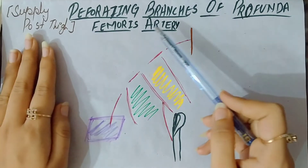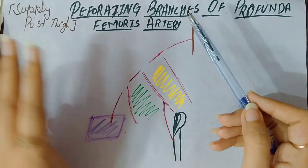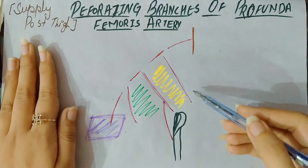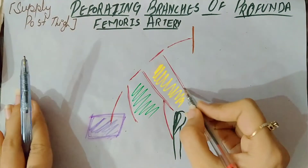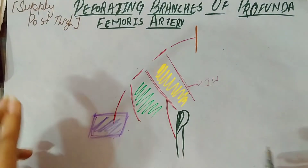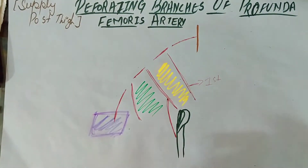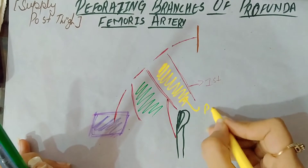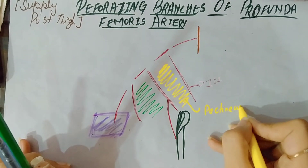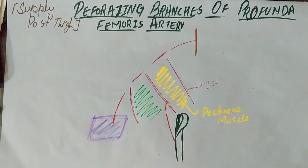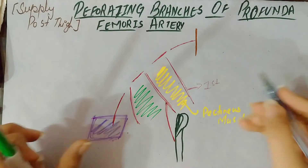The perforating branches of the profunda femoris artery are four in number: 1, 2, 3, and 4. The first branch arises from the upper border of the pectinous muscle — this one here is our pectinous muscle. So the first perforating branch arises from the upper border of the pectinous muscle.